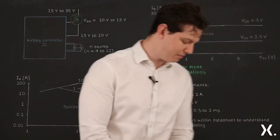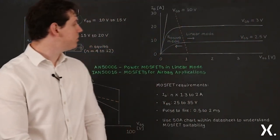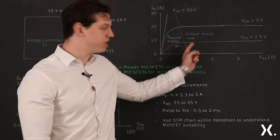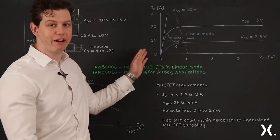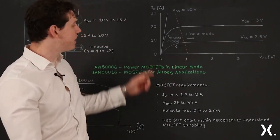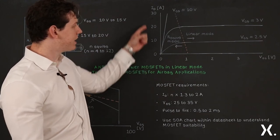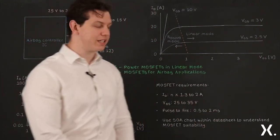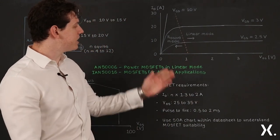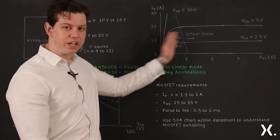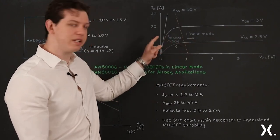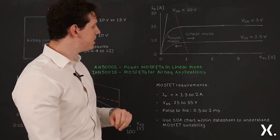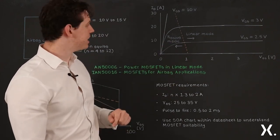So what do we mean by linear mode? Well in short it means to operate in this region here known as the saturation region. This is an output characteristic of a typical MOSFET and we've got the drain current on the y-axis and the drain source voltage on the x-axis. You can see there's two distinct regions. Before this dashed line is what's known as the RDS-on or resistive mode and this is where MOSFETs are usually used.